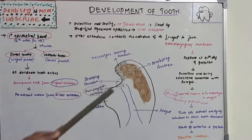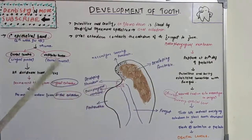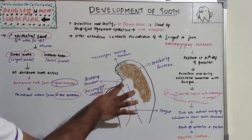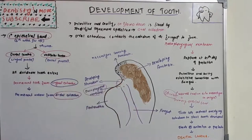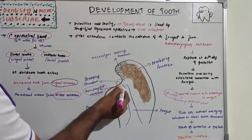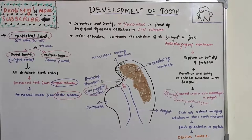The buccopharyngeal membrane ruptures around the fourth week — specifically the 27th day of gestation. Once it ruptures, a connection is established between the primitive oral cavity and the foregut. So at the 27th day of gestation, the buccopharyngeal membrane ruptures and this connection is established.